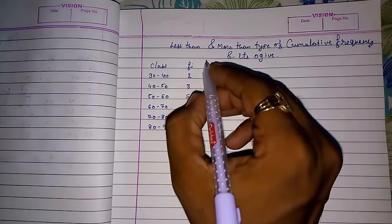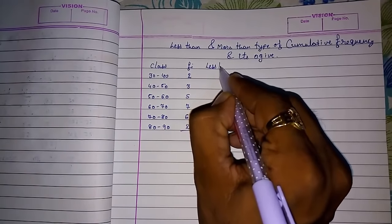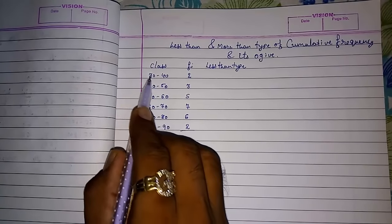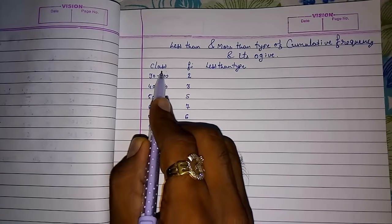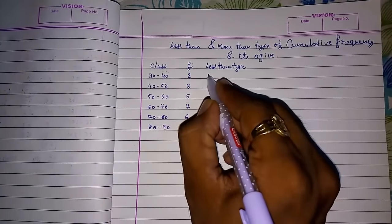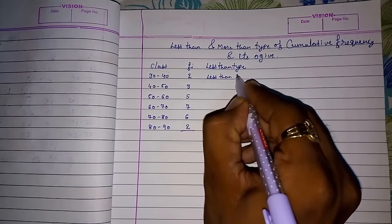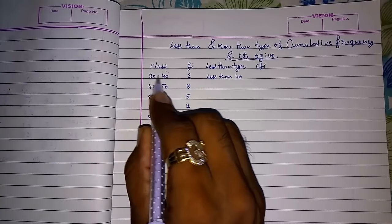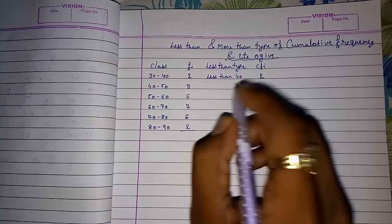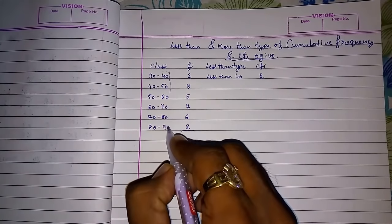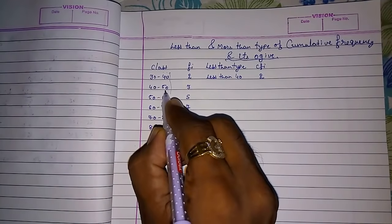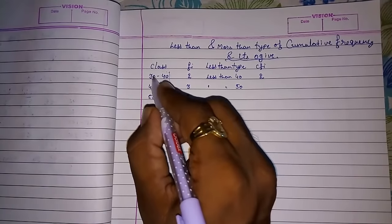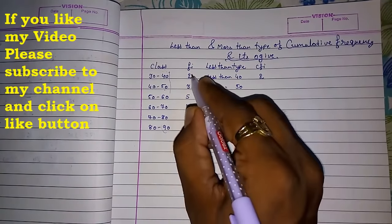First I will make the less than type. We have to start with less than 40, because less than 30 has no numbers. So less than 40 — the cumulative frequency is 2. Then less than 50 is 2 plus 3, which equals 5. We have to follow this approach for less than type, adding the frequencies one by one.